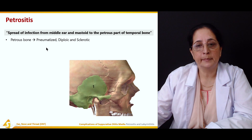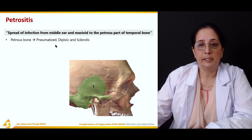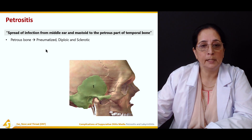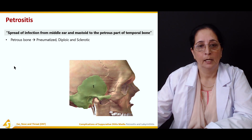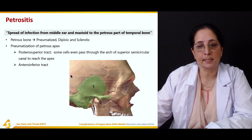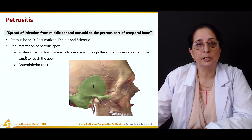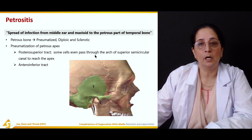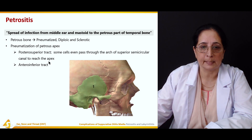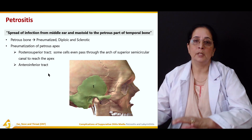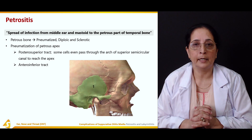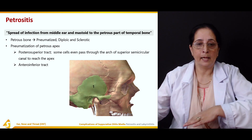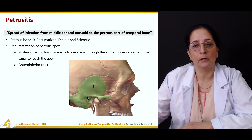The petrous bone can become pneumatized, diploic, and sclerotic — all these changes can occur as a result of petrositis. Pneumatization of the petrous apex can occur via the postero-superior tract, where some cells can pass through the arch of the superior semi-circular canal to reach the apex, and via the antero-inferior tract.